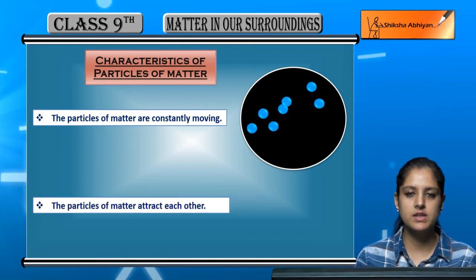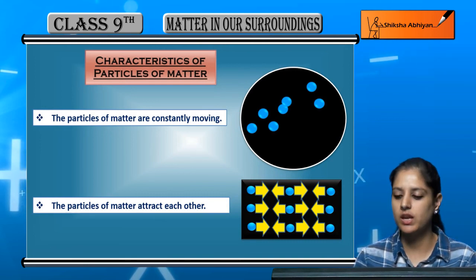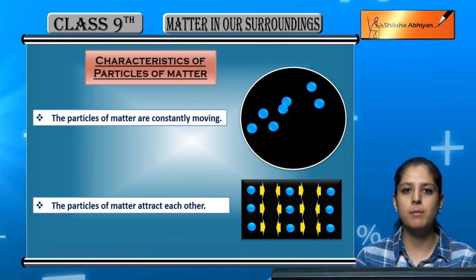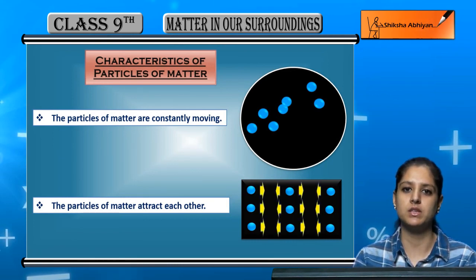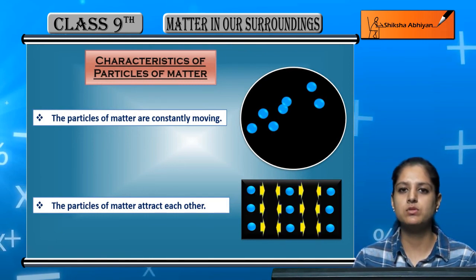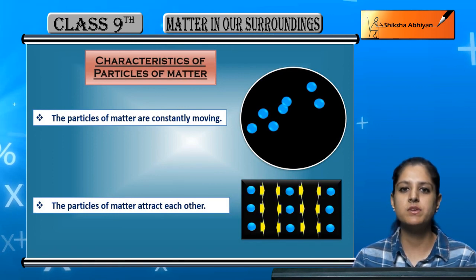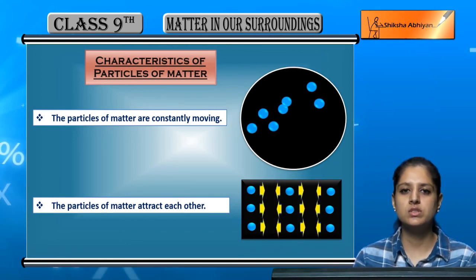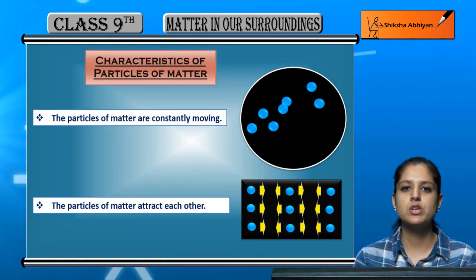The last characteristic is that the particles of matter attract each other. For example, the black represents matter and the blue represents the tiny particles. These particles always attract one another. This attraction is called a binding force. For example, wood is a solid — if its particles did not attract one another, it would not remain solid. This binding force keeps matter together. So these were the four general properties of all kinds of matter.